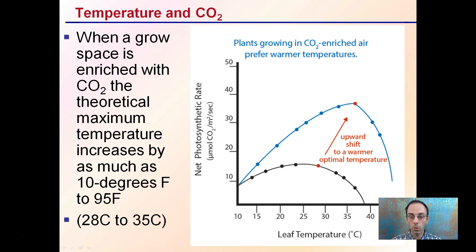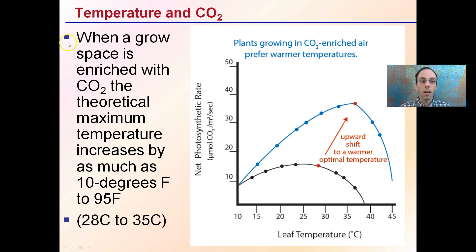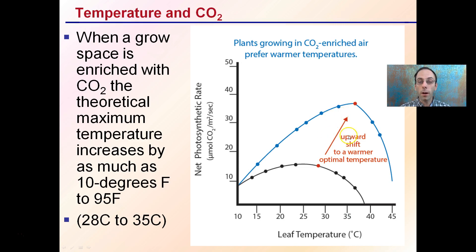The reason I say at normal CO2 levels is that when a growth space is enriched with CO2, the theoretical maximum temperature increases by as much as 10 degrees Fahrenheit to almost 95 degrees Fahrenheit, or from 28 degrees Celsius to about 35 degrees Celsius. This is because plants are able to take in carbon more effectively and not open their stomata as much. Under increased CO2 levels, plants typically can handle and prefer warmer temperatures.